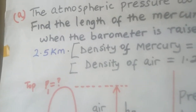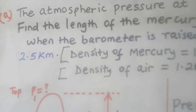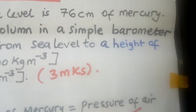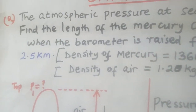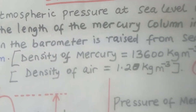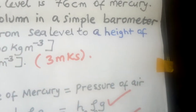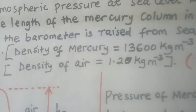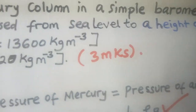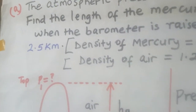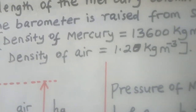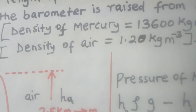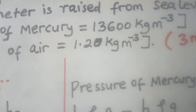When you increase the altitude, atmospheric pressure will reduce. They have told us the atmospheric pressure at sea level is 76 centimeters of mercury. They want us to find the length of the mercury column when the barometer is raised from sea level to a height of 2.5 kilometers. They have given us the density of mercury as 13,600 kg/m³ and the density of air as 1.20 kg/m³.